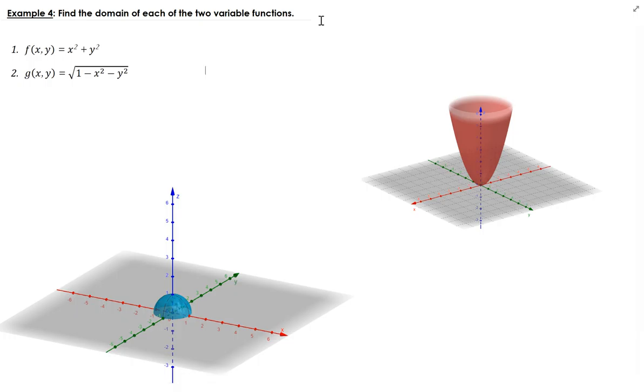In this example, we are going to find the domain of each of the two variable functions. So the first function that we have is f(x,y) equals to x squared plus y squared.